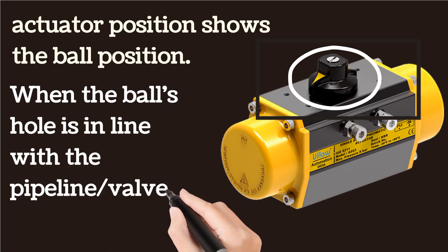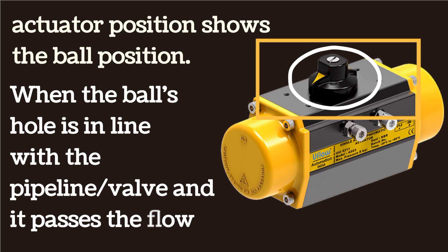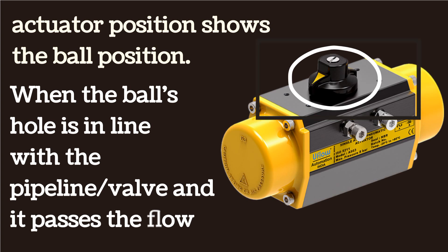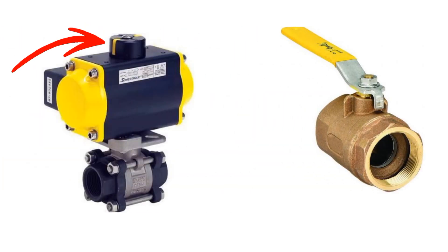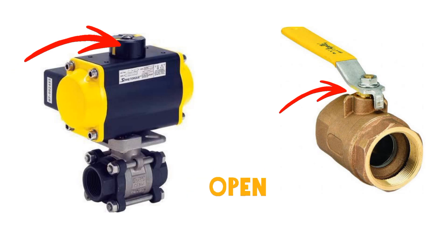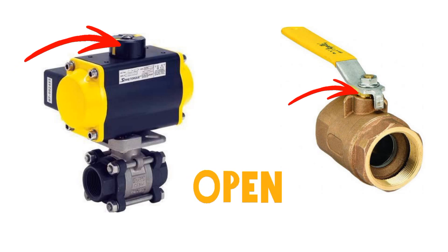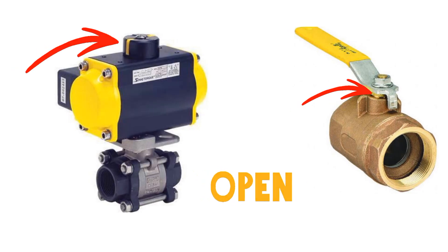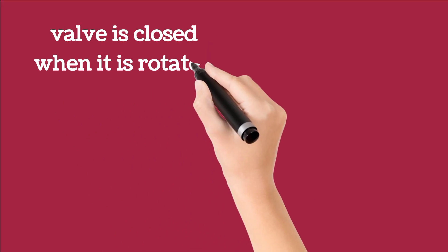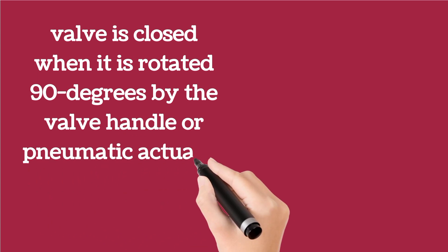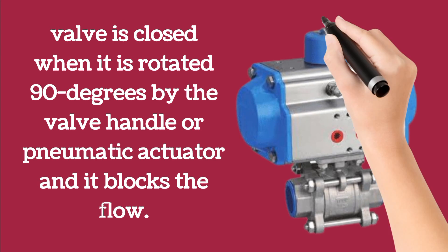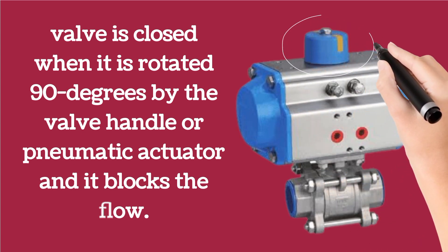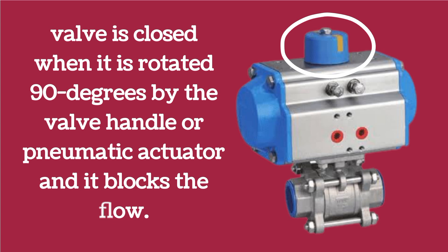This is how you recognize that the ball valve is in open position. With the help of these images, you can see the arrows show clearly that the valves are open. The valve will be closed when it is rotated 90 degrees by the valve handle or pneumatic actuator. In closed position, the valve will block the flow.